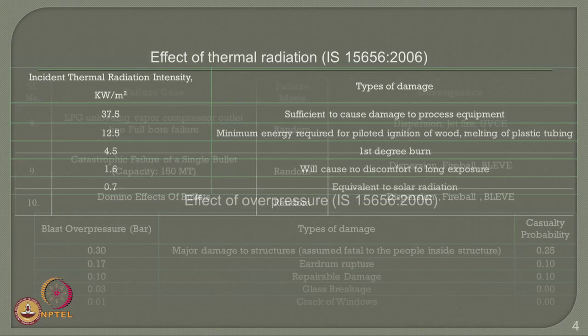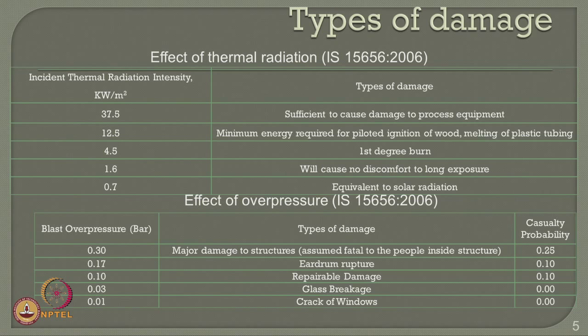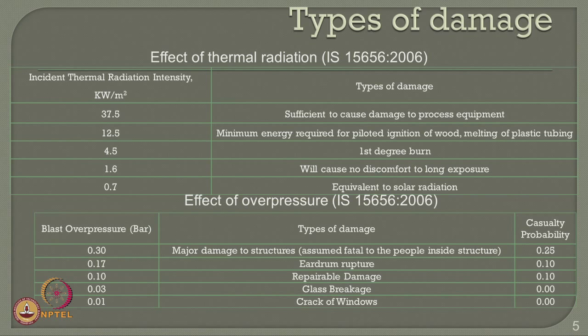As per the literature, one is interested in identifying types of damage that can be caused in an LPG station. As per IS 15656 Indian Standard Code of Practice 2006, there are common types of damage recommended for analysis in petrochemical industries. One is the effect of thermal radiation on the plant; the other is the effect of over pressure on the plant. Radiation intensity has a major classification of 4.5, 12.5 and 37.5 kilowatt per square meter, though one can also study intensities as low as 0.7 to 1.6 kilowatt per square meter.